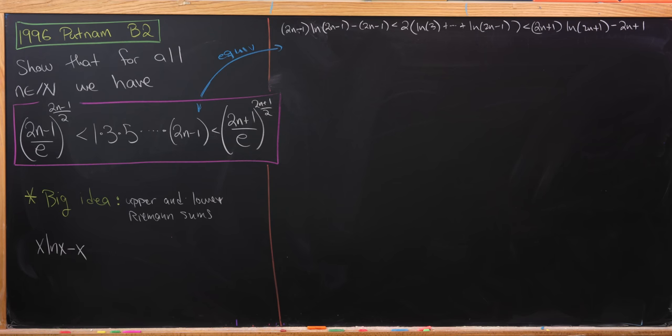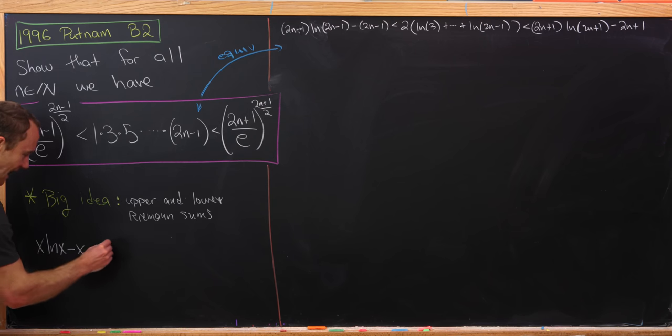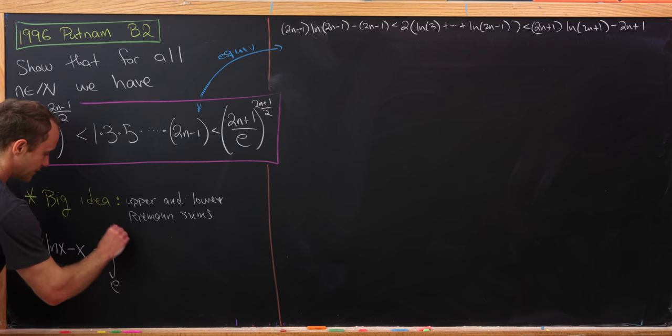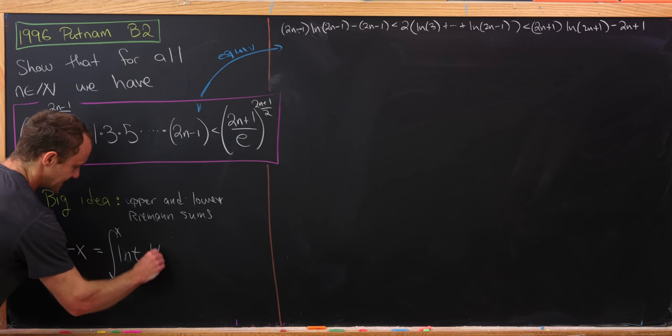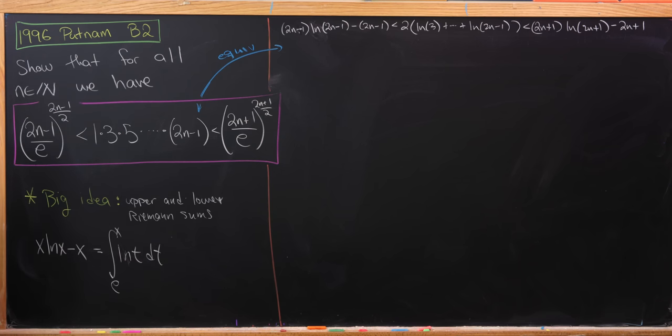They're of the form x times the natural log of x minus x, for different values of x, obviously. But this looks exactly like an antiderivative of the natural log of x. In fact, it can be expressed as the integral from e up to x of the natural log of t dt. And that's actually going to be extremely helpful.